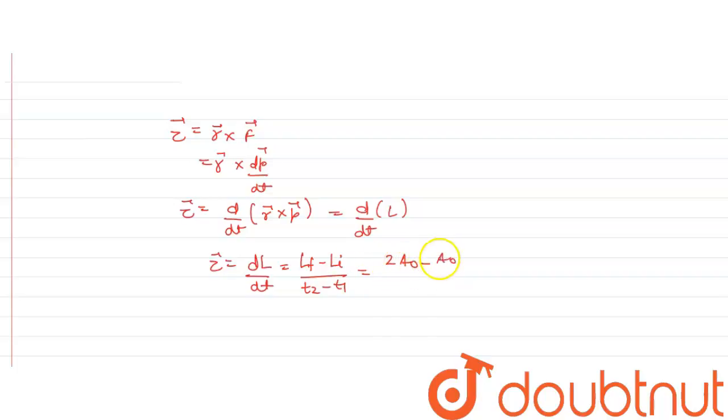L initial was A0, upon time taken is one second. So it will be A0.